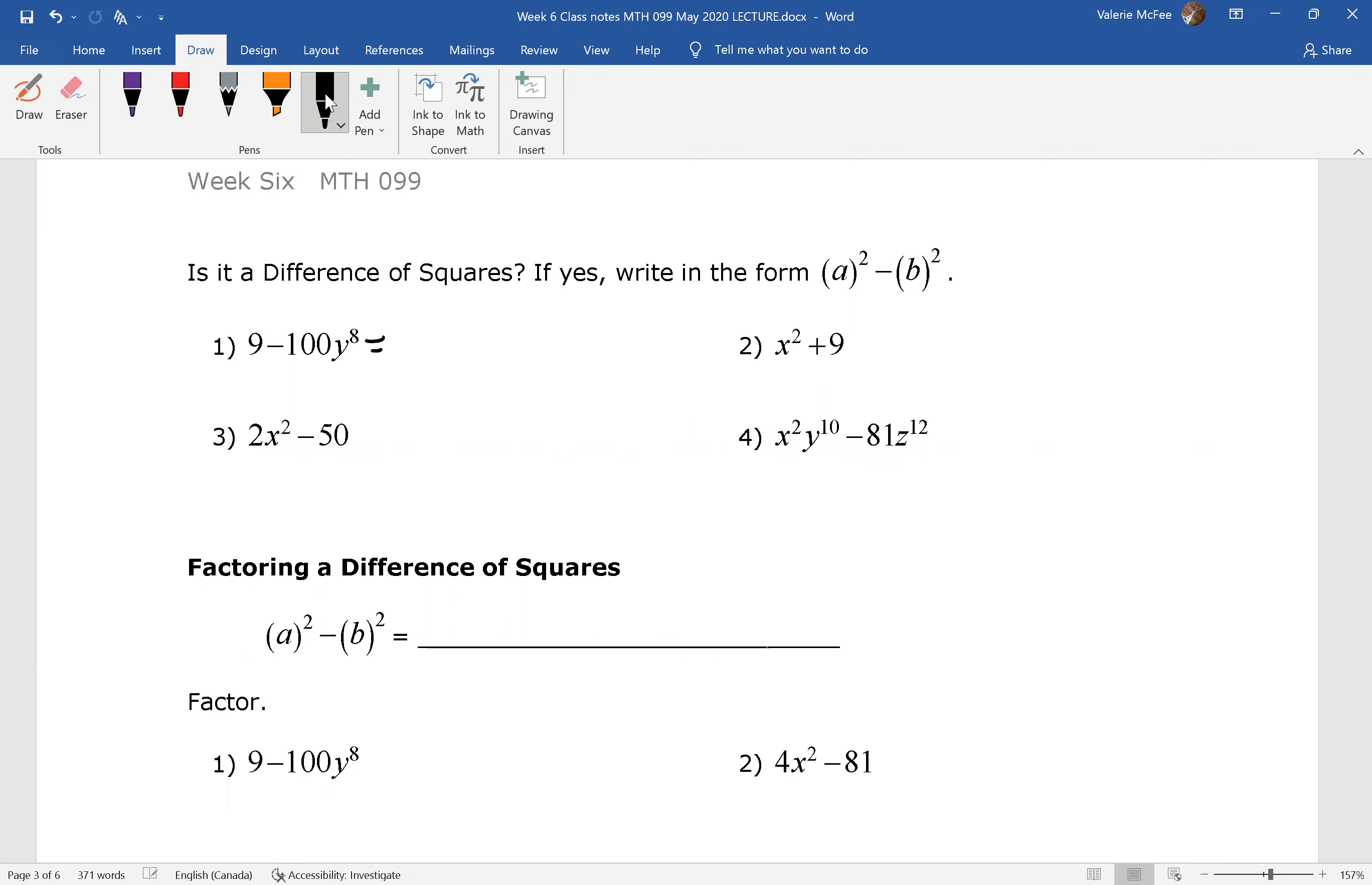So we see that this can be written as 3 squared minus 10y to the power of 4 squared. So yes, that one is a difference of squares. What about question 2? No, this is a sum, the addition of squares. It's not a difference of squares.